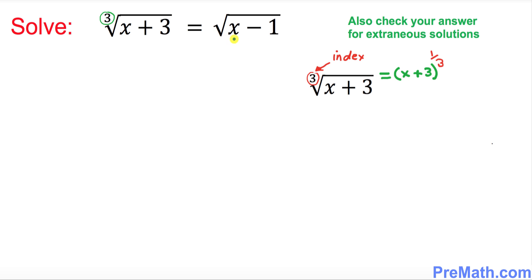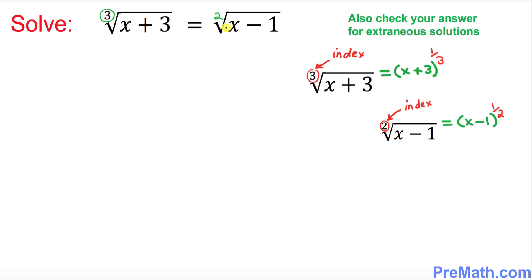Now we're going to focus on the right hand side. What is the index on this side? This is, by the way, a square root. A square root always has index 2 by default. So the square root of x minus 1 has index 2, and this could also be written as x minus 1 to the power 1 over 2.